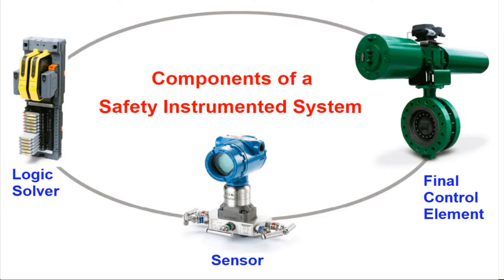The first component is the Sensor. This is used to measure process parameters such as pressure, temperature, flow, differential pressure, etc. It preferably has SIL — Safety Integrity Level — certification. It is preferred to have such certification for these sensors.